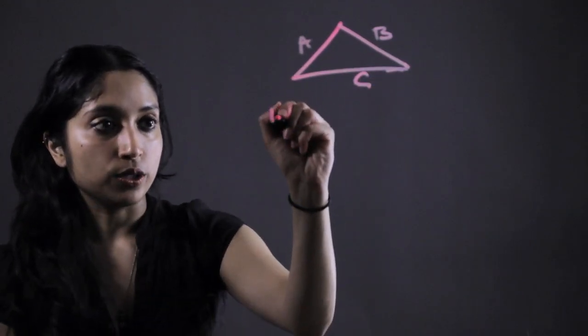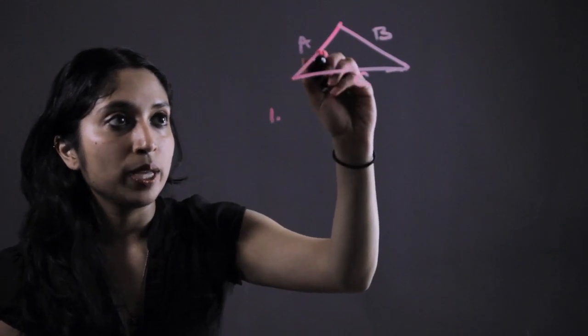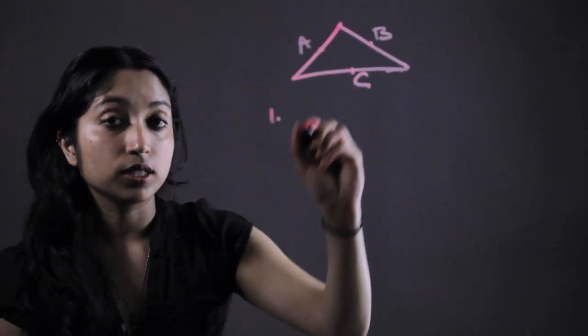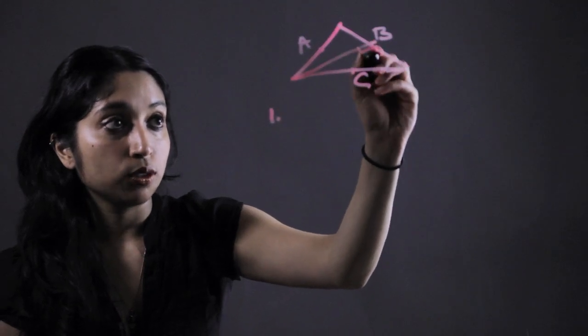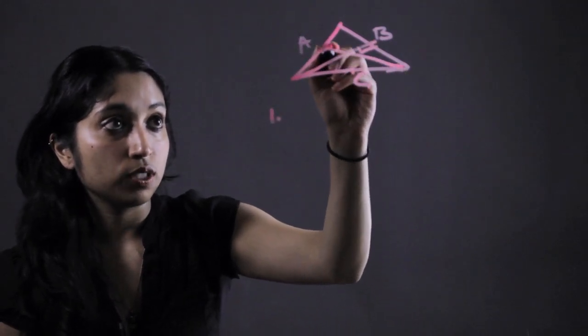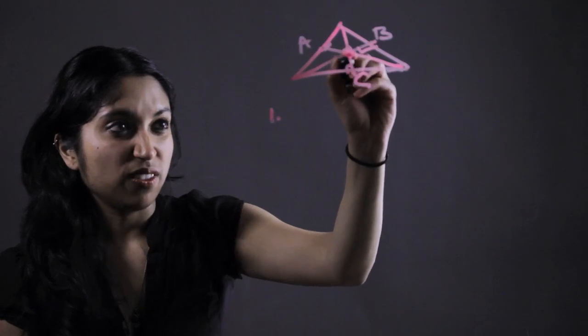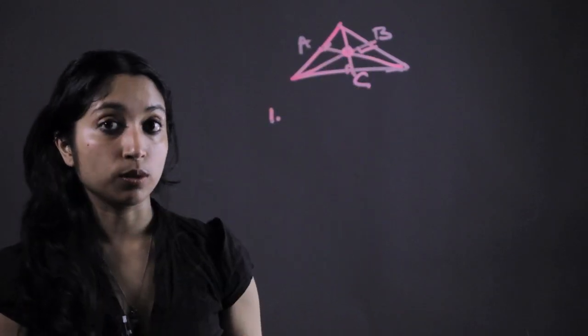First, we want to find the midpoint of each of these line segments. The circumcenter is where all three perpendicular bisectors intersect. That point of intersection is our circumcenter.